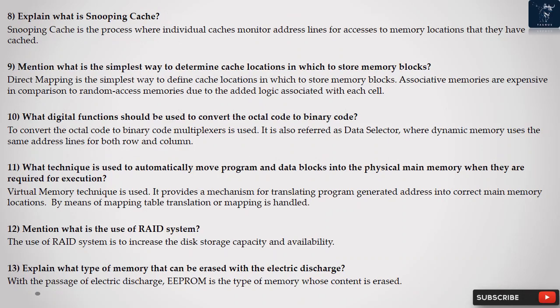Question 10: What digital functions should be used to convert the octal code to binary code? To convert the octal code to binary code multiplexers is used. It is also referred as data selector, where dynamic memory uses the same address lines for both row and column.